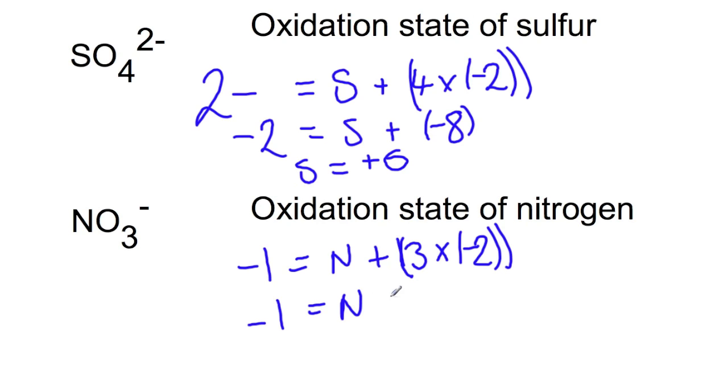So we have minus one equals nitrogen plus minus six. If we take the minus six to the other side, we find that we'll have nitrogen with an oxidation state of plus five.